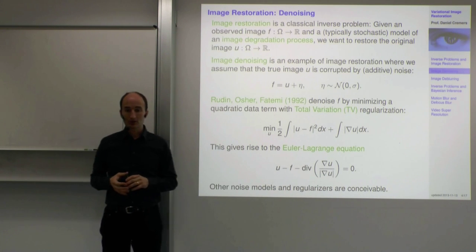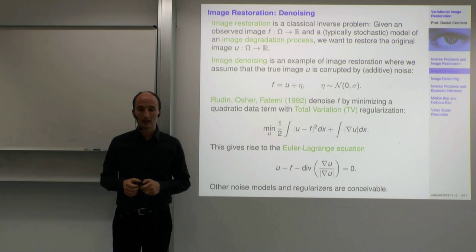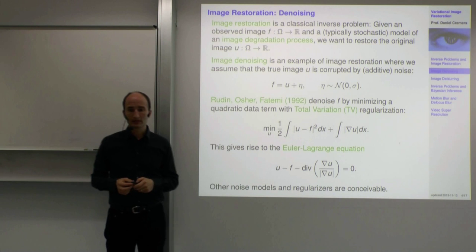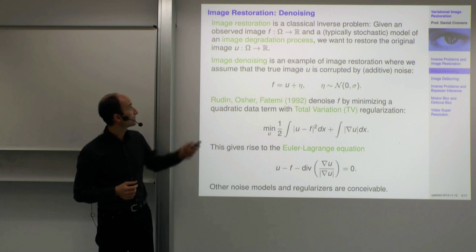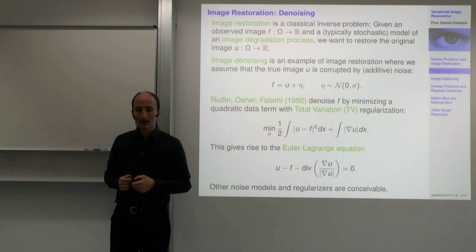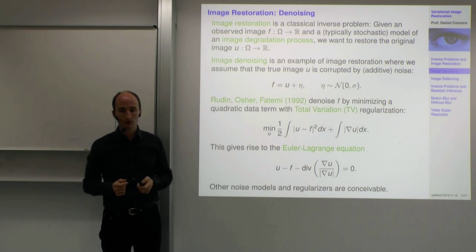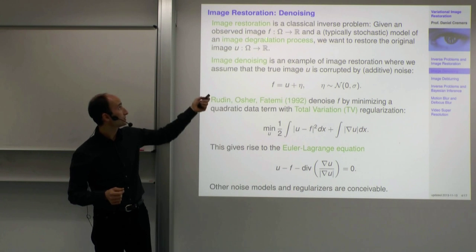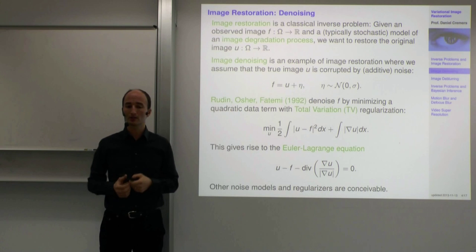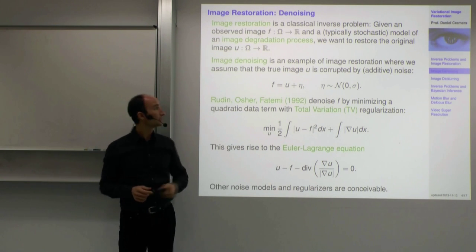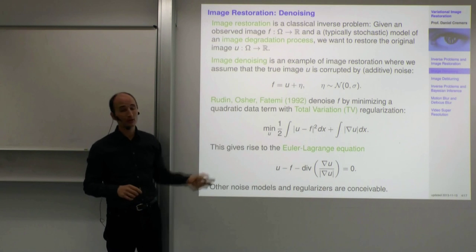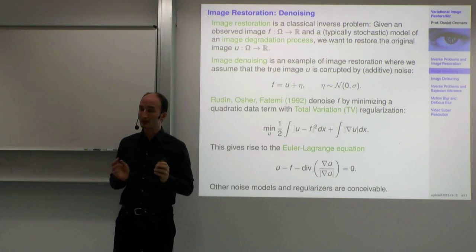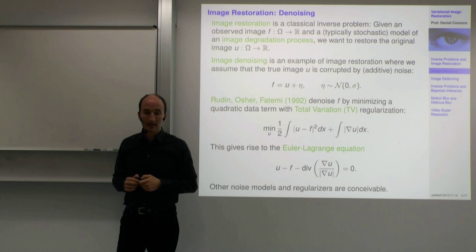Let's look at a specific example. Image restoration is a very broad field — it's a classical inverse problem. The idea is that you're given an observed image F, and some typically stochastic or probabilistic model of the image degradation process. What we want to restore is the original image. The observation is somehow related to the true image, and this is what we want to restore.